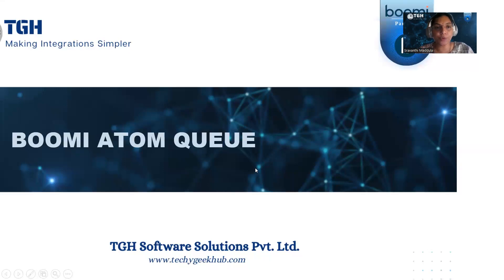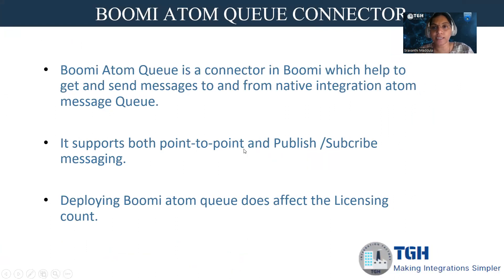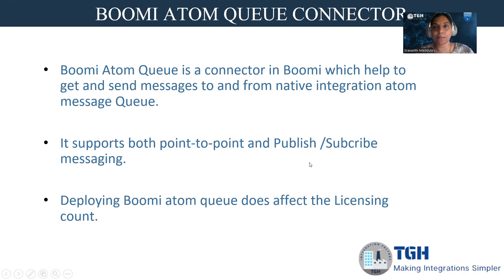Bhoomi Atom Queue is one of the connectors provided in Bhoomi. It helps to get and send messages to and from the native integration Atom Message Queue. It supports point-to-point and publish-subscribe messaging. Point-to-point means one sender and one receiver. Publish-subscribe means one sender can send messages to multiple subscribers. Deploying Atom Queue does not affect the licensing cost in Bhoomi.